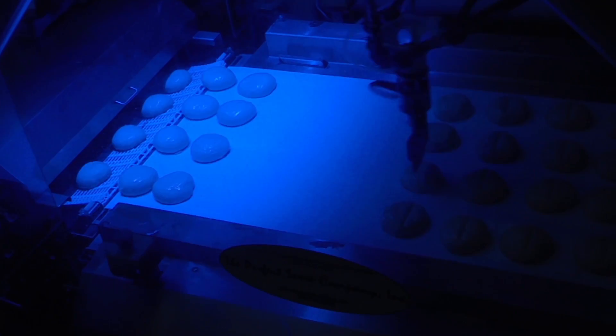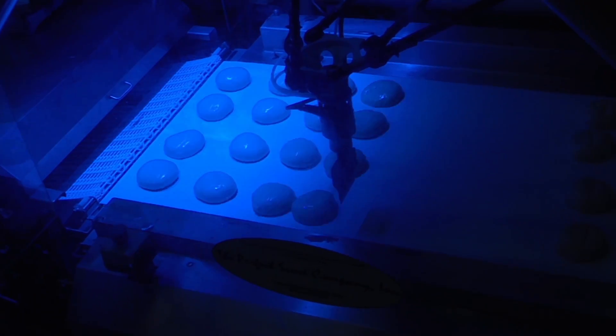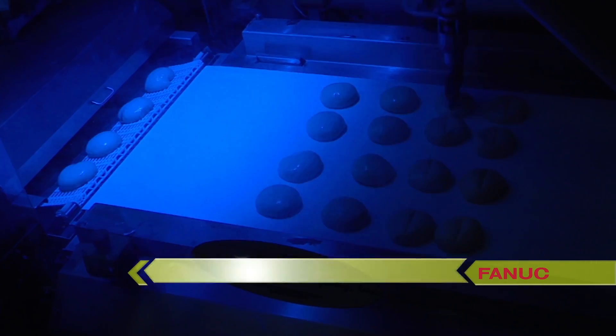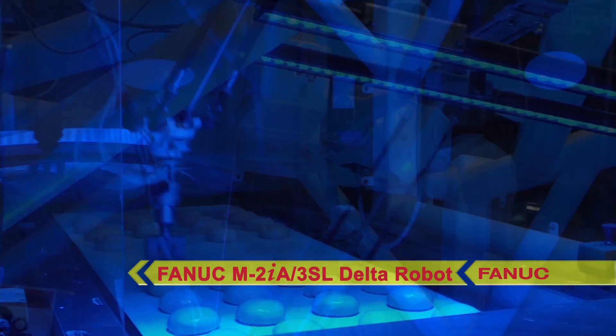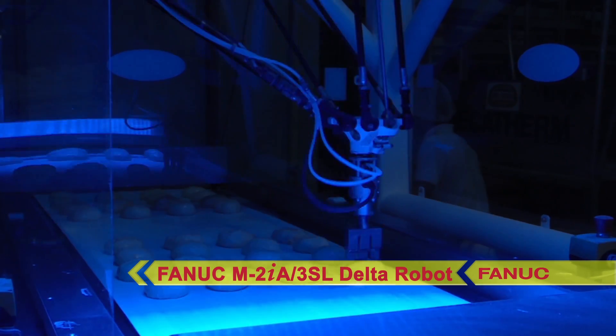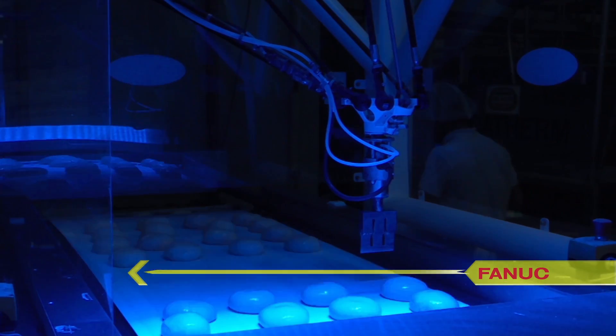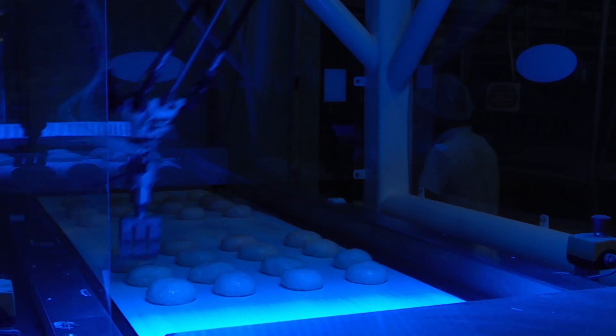The Perfect Score developed this bread scoring system to utilize the FANUC M2IA-3SL Delta-style robot. Previously, the scoring for this line required multiple persons to score by hand with knife blades.